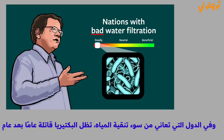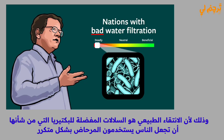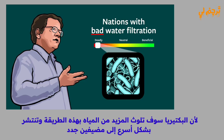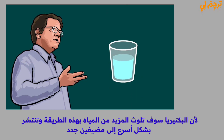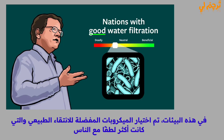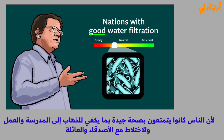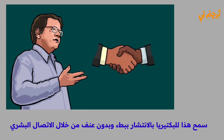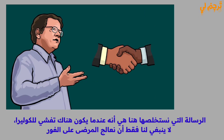In nations with bad water filtration, the bacteria remained deadly year after year. Natural selection favored strains that would make people use the toilet more frequently, even if it eventually killed them through dehydration, because the bacteria would contaminate more water and spread faster to new hosts. In countries with good water filtration, strains of the bacteria evolved toward commensalism. In these environments, natural selection favored microbes that were 'kinder' to people, because people were then healthy enough to go to school, to work, and to mingle with friends and family, allowing the bacteria to spread slowly and non-violently through human-to-human contact.